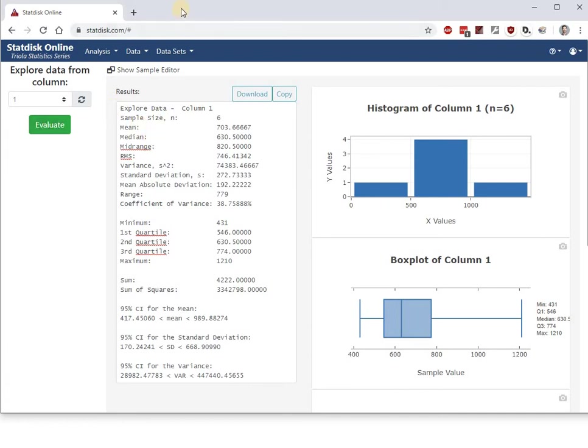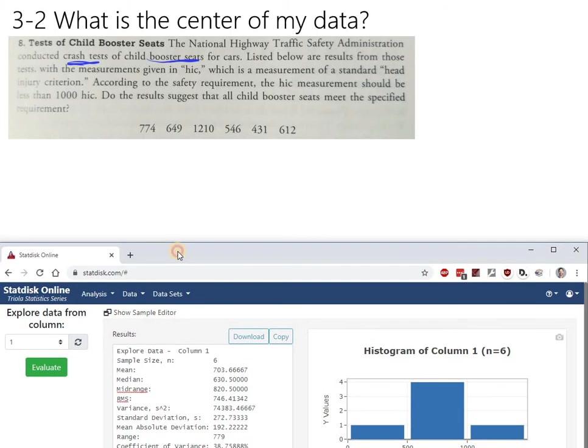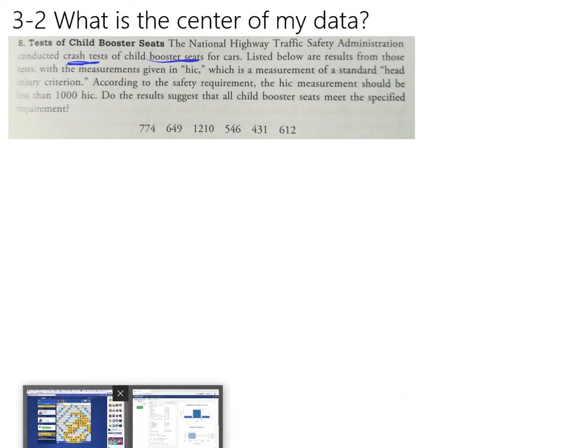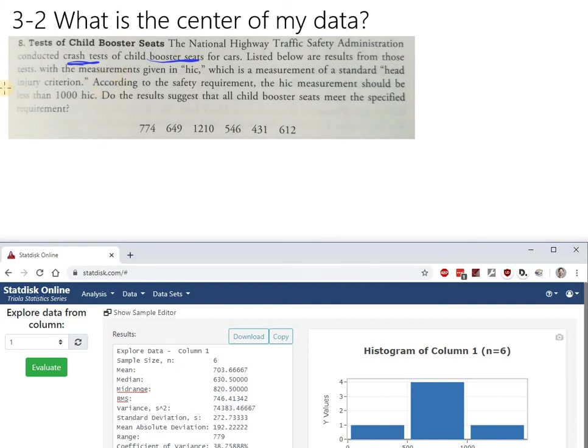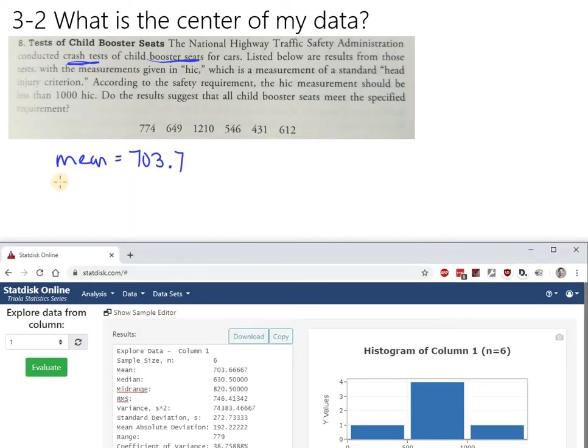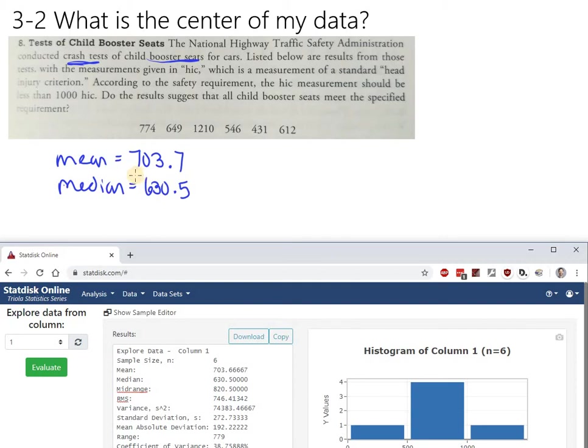But for the moment, we just need to copy down the mean, median and mid range. So I'm just going to go ahead and jot those numbers down. So when I draw on that, the other one goes away. Technology. Let's see here. Yeah, okay. I probably can't do that. But the mean is 703.7. And the median is 630.5. And the mid range is 820.5.